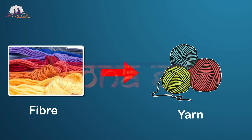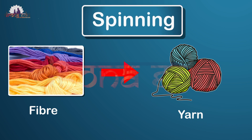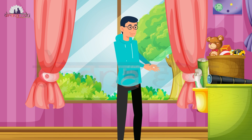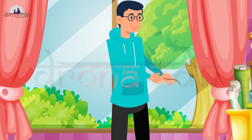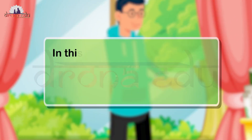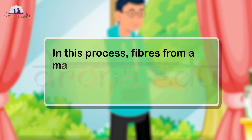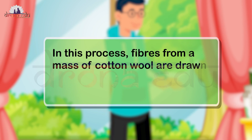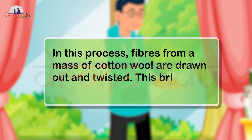The process of making yarn from fibers is called spinning. If you take cotton in your hand and gently rub your palms together, you can see the cotton has now turned into the form of a long thread-like structure. This is nothing but yarn.